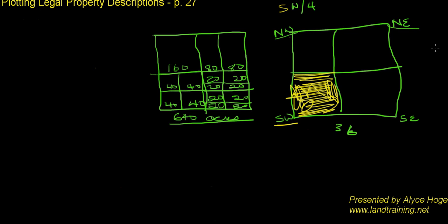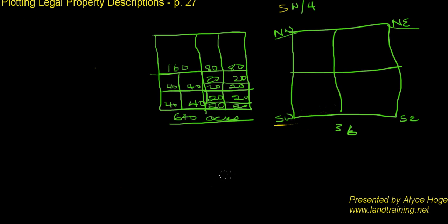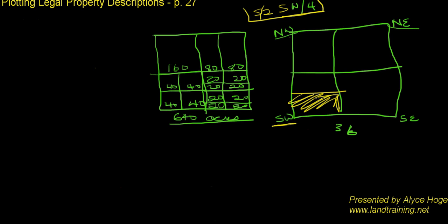Quarter-quarter calls means we're going to divide a quarter into subsections. Your property description might say something like the south half of the southwest quarter. The way we do this is we work backwards: we start with the southwest quarter, then we want the south half of that southwest quarter, so we divide it in half. How many acres? Half of 160, so this will be 80 acres and the other half will be 80 acres.